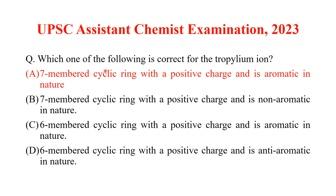Which one of the following is correct for the tropylium cation? The tropylium cation is a seven-membered ring with a positive charge and six pi electrons, making it an aromatic ion.